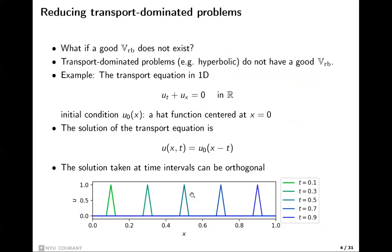For transport-dominated problems, here's a very simple example where this fails miserably. Consider the transport equation in 1D with a hat function initial condition — the solution is just this hat function traveling to the right. If you sample the solution at time instances 0, 1.3, 3.5, and 7.6, the supports are not even overlapping. These snapshots are orthogonal to each other, so if the pulse is narrow enough and the domain large enough, you end up with a completely orthogonal set of snapshots, meaning a low-dimensional reduced basis cannot exist for a given accuracy.